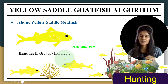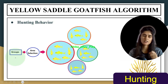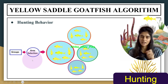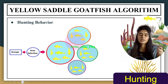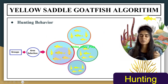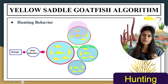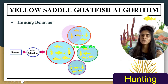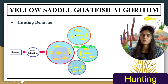The hunting behavior begins with the group selecting an area for the hunt where there is maximum prey. Once the area is selected, they divide into subgroups so they can explore the entire area. Goatfish in subgroups do not interfere with each other's territories and they generally ignore other subgroups except the one having more prey. This hunting behavior is simulated in this algorithm.